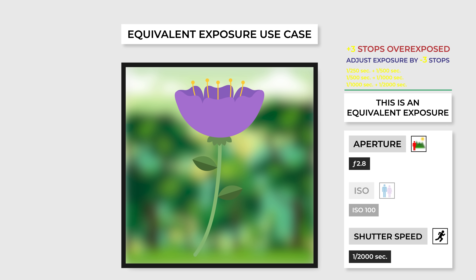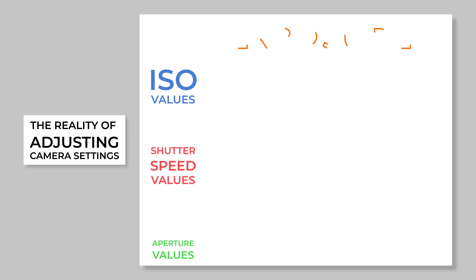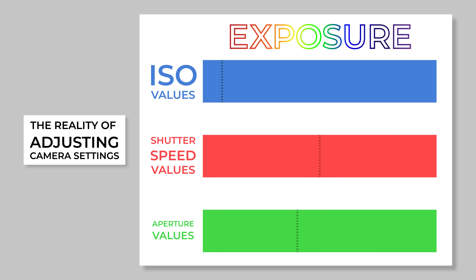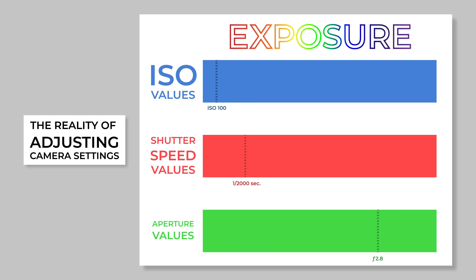But how do we calculate equivalent exposures? It's relatively simple. If you want to adjust one camera setting — let's say aperture — to make the image brighter, then you need to adjust ISO or shutter speed, whichever one is appropriate, to make the image darker. It's a matter of finding a combination of settings that balance to create an image that is technically perfect, based on the creative choices you have made. Since the original settings of f8, ISO 100, and 1/250th of a second weren't suiting our creative vision, we adjusted the aperture to produce a shallower depth of field. But because we consequently let more light into the camera, we needed to quicken the shutter speed to decrease the exposure to an adequate level.